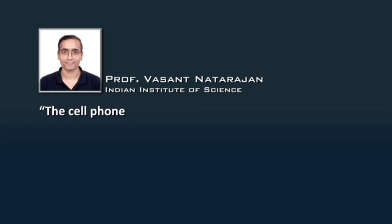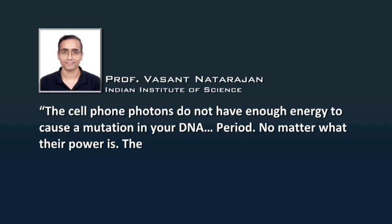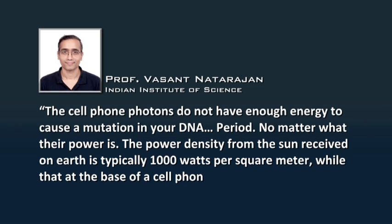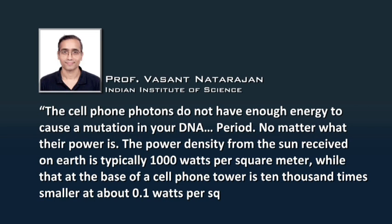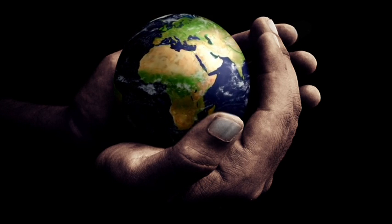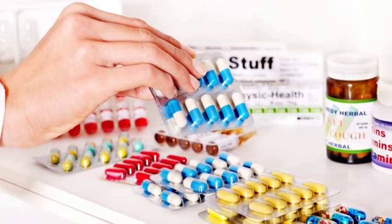Cell phone photons do not have enough energy to cause a mutation in your DNA — period — no matter what their power is. The power density from the Sun received on the Earth is typically 1,000 watts per square meter, while that at the base of a cell phone tower is ten thousand times smaller, at about 0.1 watts per square meter.